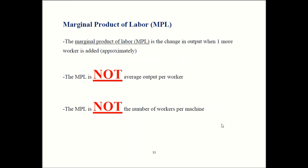Now we talk about something called the marginal product of labor, often abbreviated as MPL. This definition is a little bit approximate — for a more precise version, take the next course in this sequence, Intermediate Microeconomics. The marginal product of labor is the change in production when you hire one additional worker. There are some myths about the MPL: the MPL is in general NOT average output per worker. We'll see some examples shortly that make that distinction clear.